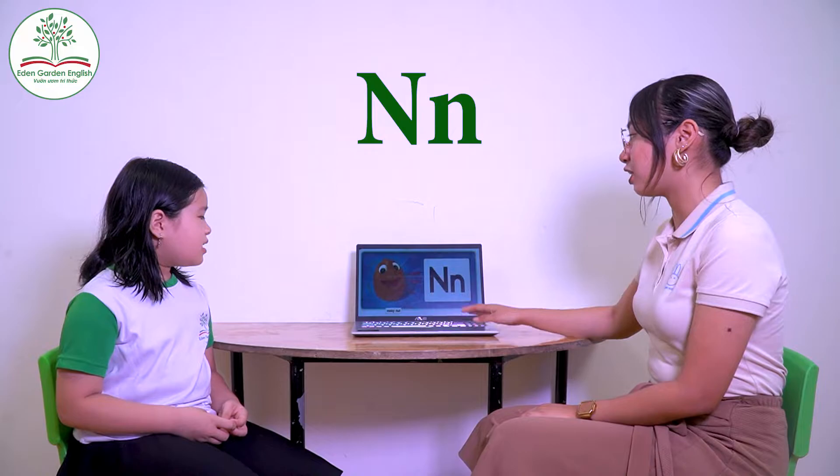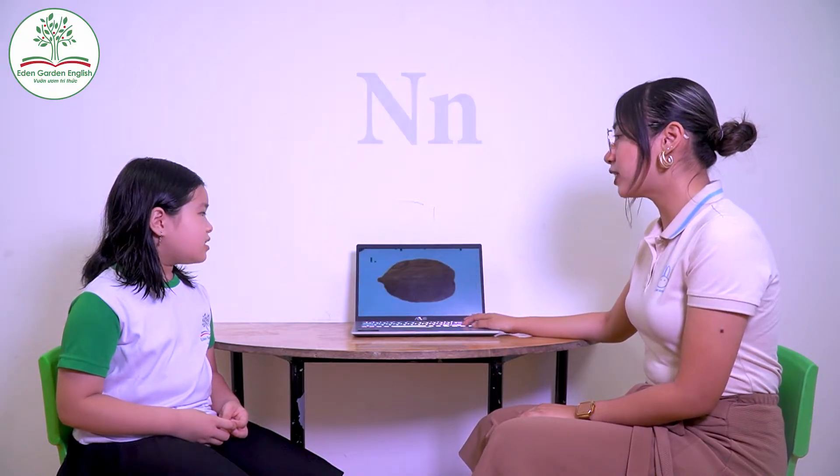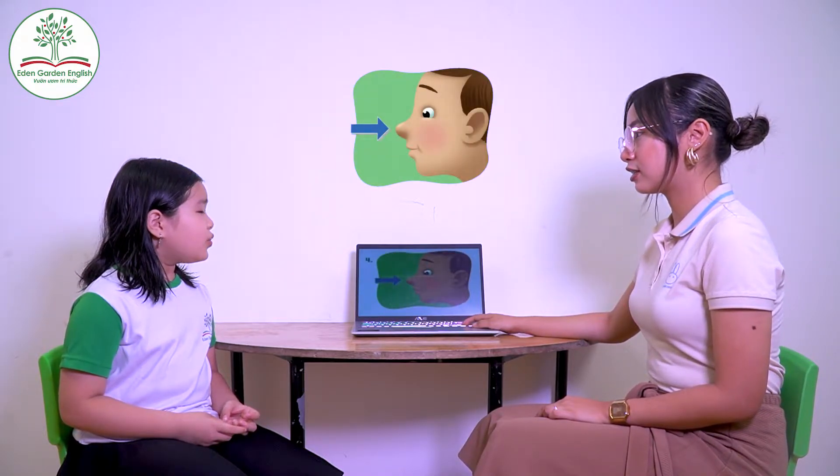Now, let's go to the letter N. Very good. Now, what is it? Mouse. It's a... It's a... Next one. It's a... Next. And it's a... Nose. Nose. Mouse. Very good.